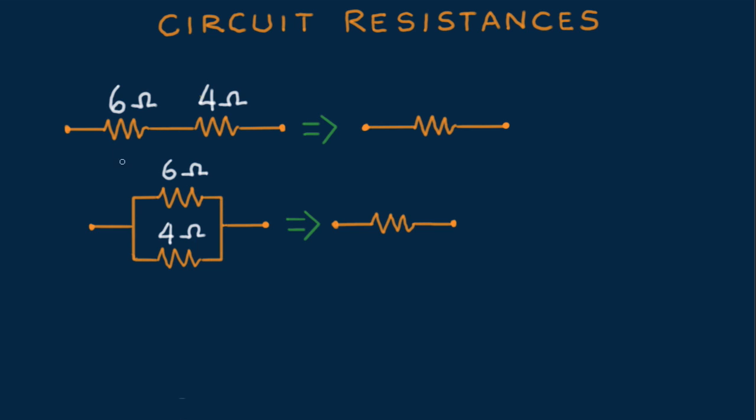Here we have a 6 ohm and a 4 ohm resistor, in series, also in parallel. I'm keeping the numbers simple, no mathematical challenge here. We concentrate on the ideas.